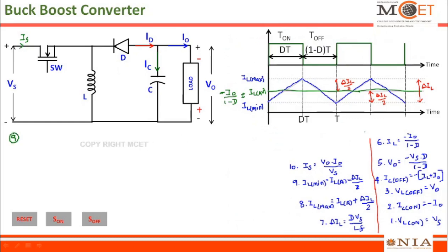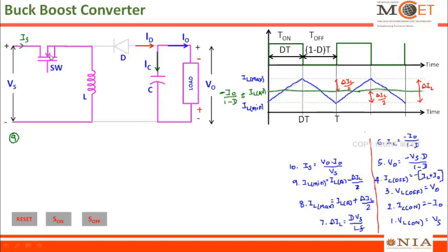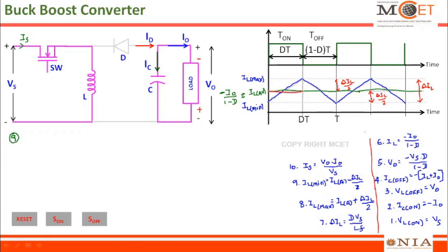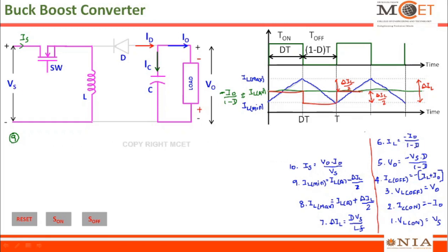The ninth part of the derivation is to find out the average and RMS value of the switch current. Whenever the switch is on, then only the current will be flowing through it. We can look into the average current flowing through the switch. When the switch is on, whatever current is flowing through the switch is also flowing through the inductor. So this is the average value of the inductor current which flows through the switch. This part will be there for the switch also, and since the switch is off, there will not be any current flowing through it. From the point where the switch is on again, the same magnitude of current will be flowing.